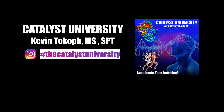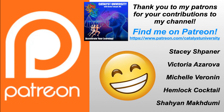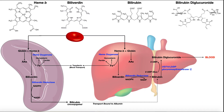Welcome back to Catalyst University. My name is Kevin Tokoff. Please make sure to like this video and subscribe to my channel for future videos and notifications. And a big thank you to my patrons on Patreon for your contributions. In this video, we're going to be looking at the complete pathway for degradation of red blood cells and the degradation pathway for heme into its individual degradation products, which are excreted in the urine and the feces.